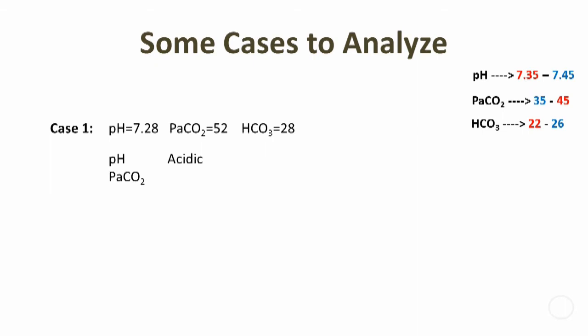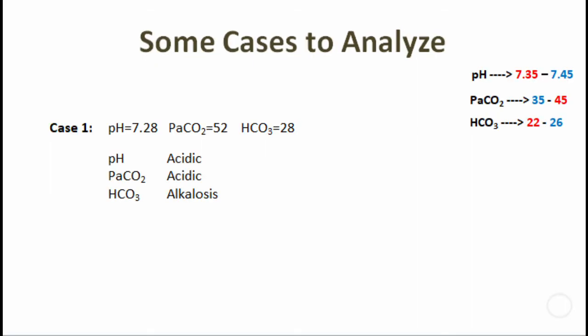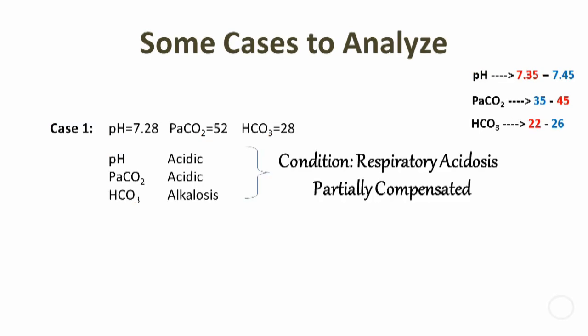PaCO2 is acidic, HCO3 is alkaline, which means PaCO2 and HCO3 are partially opposite each other. That is, lungs and kidneys are partially compensating each other to keep the pH value normal. Therefore, this condition is diagnosed as respiratory acidosis, partially compensated.